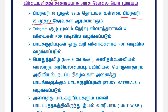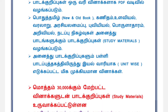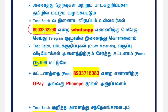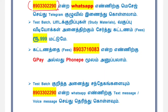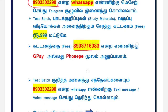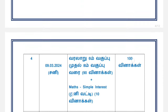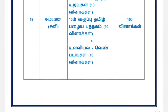If you want the full instructions PDF, you can access it via link. If you want to pay fees, you can pay to 8903-716-083 via Google Pay or Phone Pay. You can send the WhatsApp number and Telegram number. You can also send the test schedule along with payment.